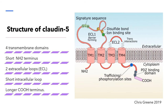Claudin-5 consists of 4 transmembrane domains, a short amino-group terminus, 2 extracellular loops, a short intracellular loop and a longer carboxyl terminus, and also contains a disulfide bond and ion binding site, as well as an ion-conserved signature motif. The long carboxyl terminus contains the PDZ binding motif for interaction with scaffolding proteins including ZO1, ZO2 and ZO3, and the carboxyl acid group terminus contains tyrosine and phosphorylation residues.